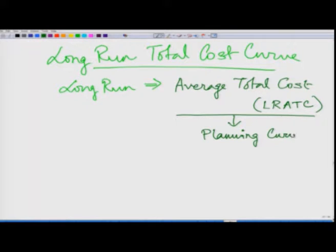In the long run, I can change all my inputs — all inputs become variable — and I can change the scales of production over time, deciding the amount of production I am going to make. Therefore I am planning for a longer duration or for the future. Based on this long run average total cost, I can identify at which level I have this LRATC.